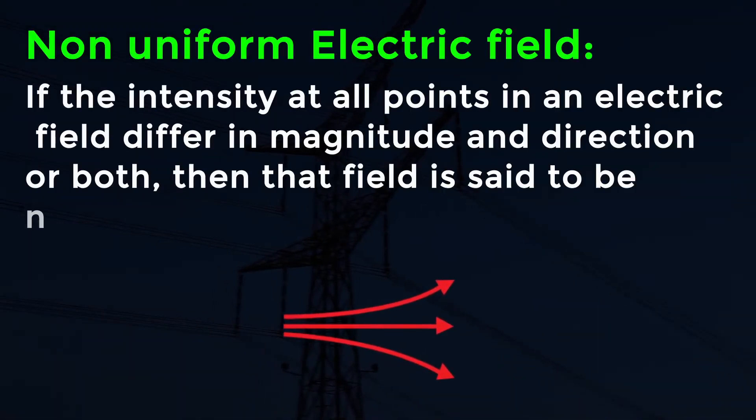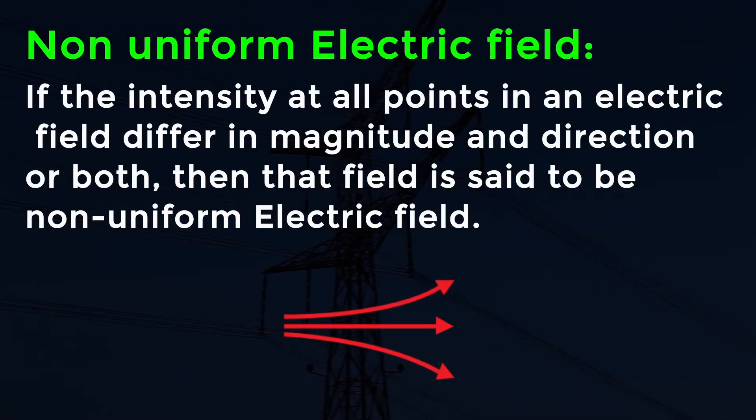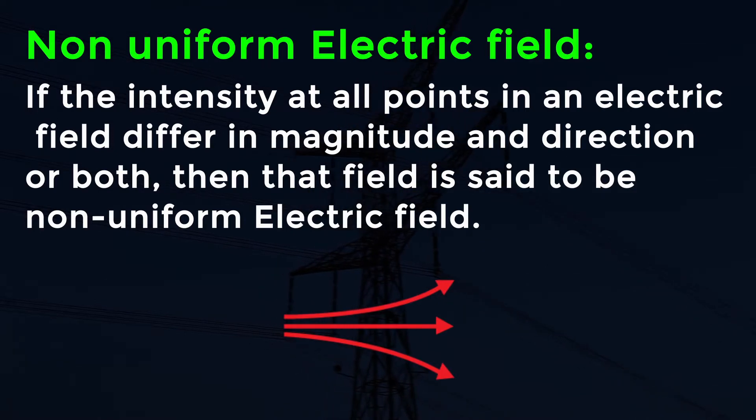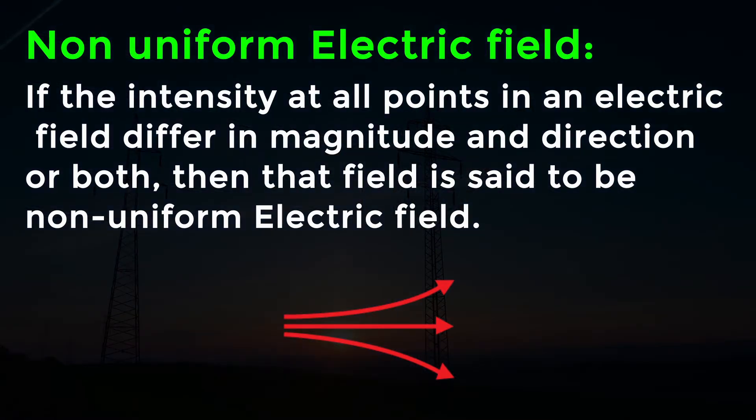Non-uniform electric field: If the intensity at all points in an electric field differ in magnitude and direction, or both, then that field is said to be a non-uniform electric field.